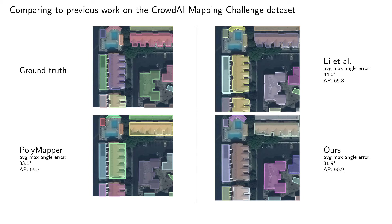Polymapper directly outputs polygons with a recurrent neural network approach. Our result is in the bottom right. In order to measure the regularity of the contour compared to the ground truth, we compute the angle error between predicted tangents and ground truth ones. We achieve a lower error as our network explicitly learns directional information through the frame field. In terms of average precision (AP), we are between Polymapper and Lee and others.